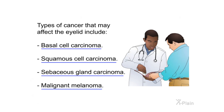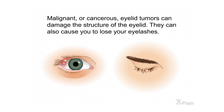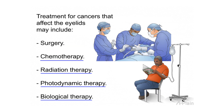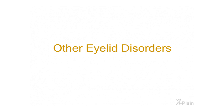Types of cancer that may affect the eyelid include basal cell carcinoma, squamous cell carcinoma, sebaceous gland carcinoma, and malignant melanoma. Malignant or cancerous eyelid tumors can damage the structure of the eyelid and cause you to lose your eyelashes. Treatment for cancers that affect the eyelids may include surgery, chemotherapy, radiation therapy, photodynamic therapy, and biological therapy.